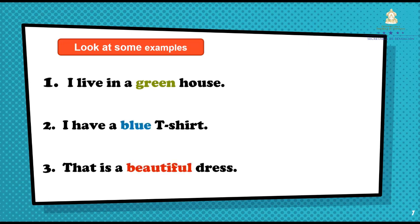Now look at some examples. Observa los siguientes ejemplos. Number one: I live in a green house. In this case, green is describing the house. Yo vivo en una casa verde. Green describes the house — el color verde describe la casa. Number two: I have a blue t-shirt. Yo tengo una camisa azul. Blue describes the t-shirt.